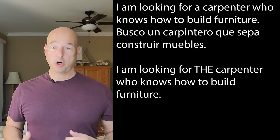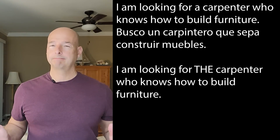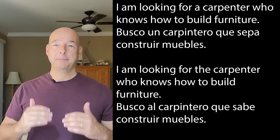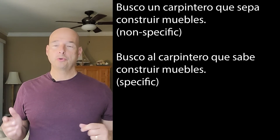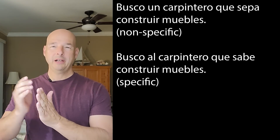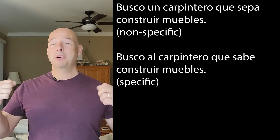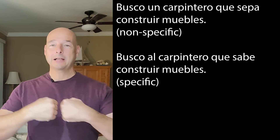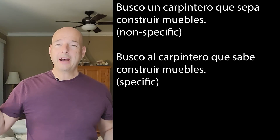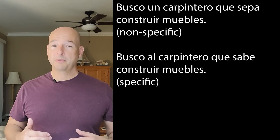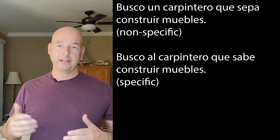What if I'm talking about a specific carpenter and I want to say I'm looking for the carpenter that knows how to make furniture? Busco al carpintero que sabe construir muebles. A couple things happened here. Not only do we change it to el carpintero, we have an a in there — that's our personal a. It got put in there and it melded with el to become al. Busco al carpintero. When I was just talking about a carpenter, any old carpenter, I didn't stick the personal a in there. It's common not to use the personal a after certain verbs like buscar when we're talking about a non-specific person. You'll get a feel for that as time goes on.